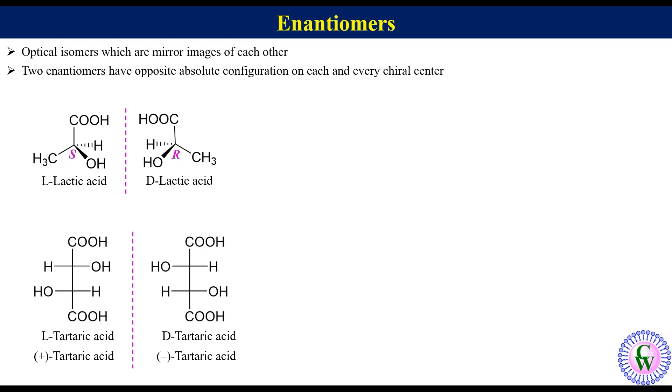We can also find this relation by determining absolute configurations. L has R-R configuration while D has S-S. Since they are optical isomers with opposite configuration on each chiral center, so they are enantiomers.